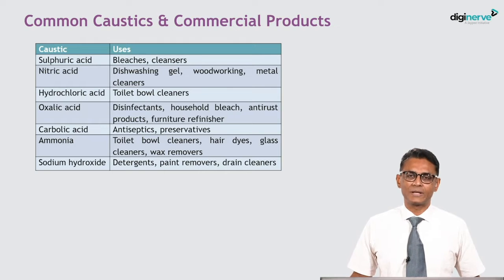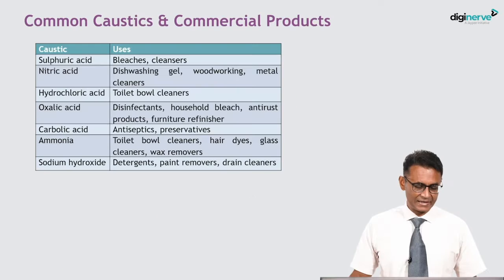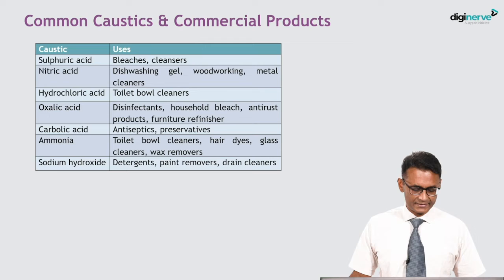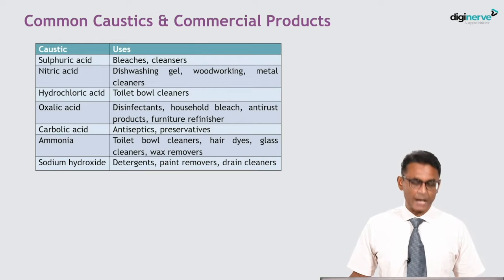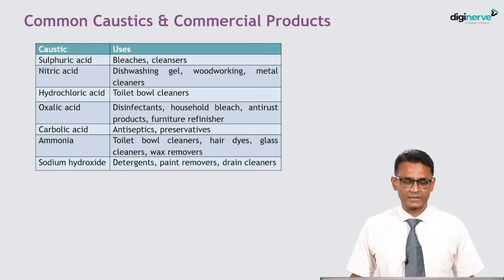The commercial products where these acids are used: sulfuric acid is used in bleachers and cleansers; nitric acid in dishwashing gel, woodworking, and metal cleaners; hydrochloric acid is used in toilet bowl cleaners, oxalic acid, disinfectants, household bleach, anti-rust products, and furniture refinishers. Carbolic acid is used as antiseptics and preservatives.